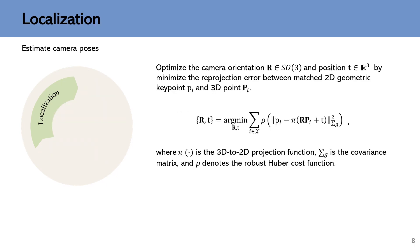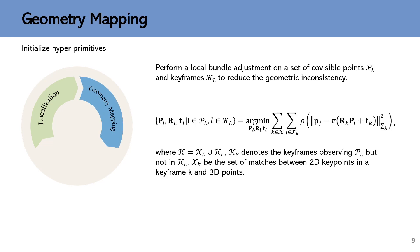Localization component makes use of geometry features to calculate current camera poses. In the geometry mapping thread, we incrementally initialize sparse hyper primitives and perform a local bundle adjustment using photometric loss.